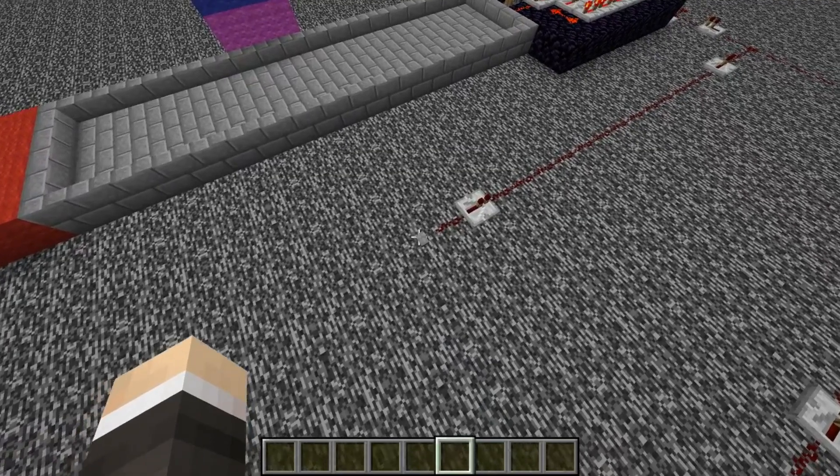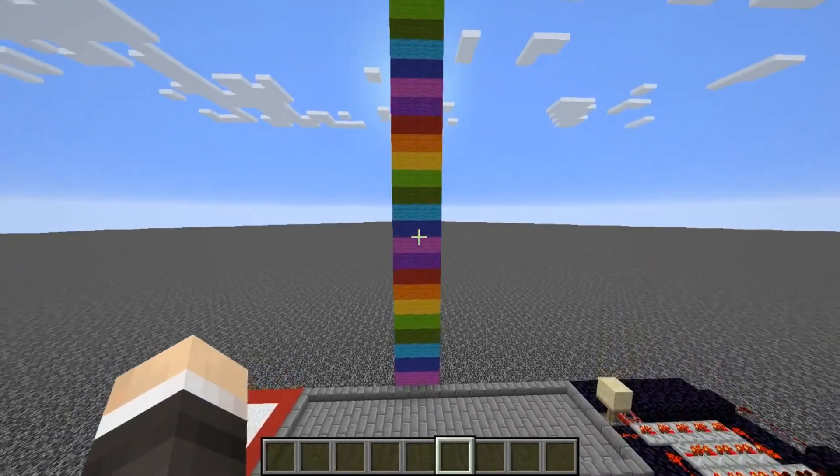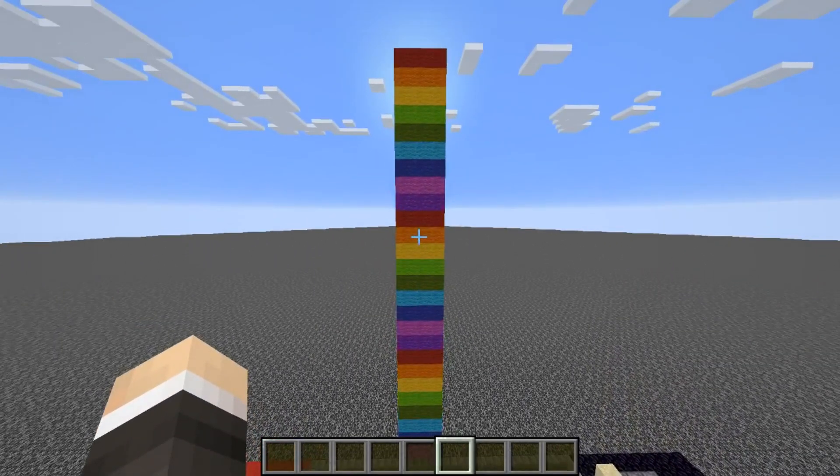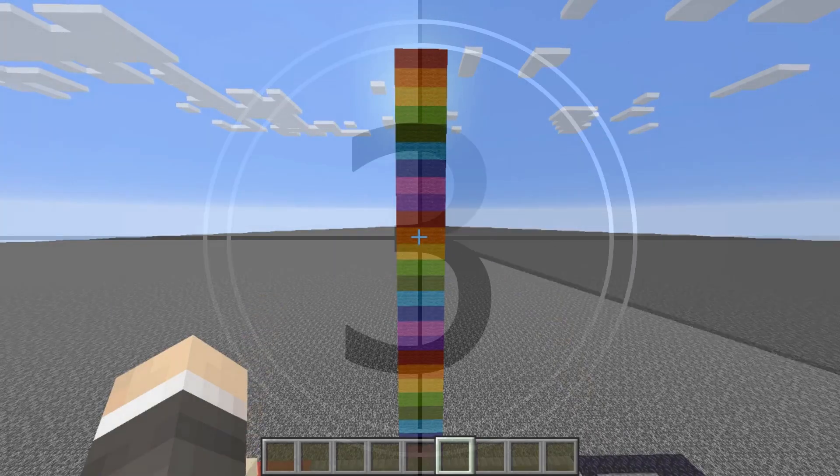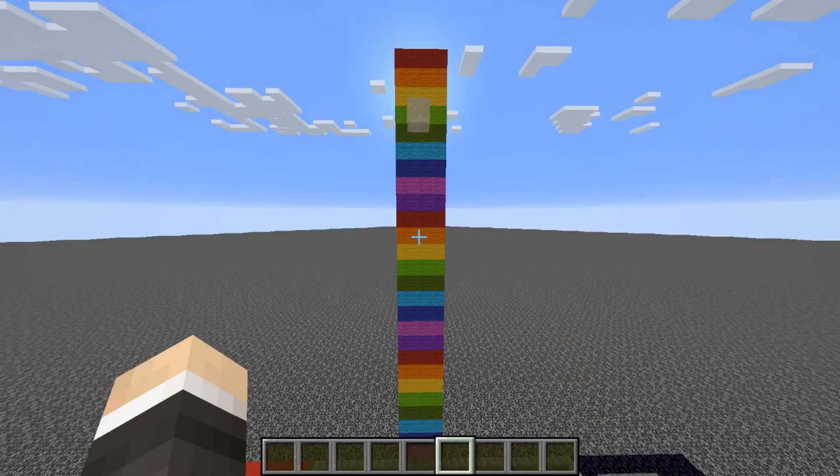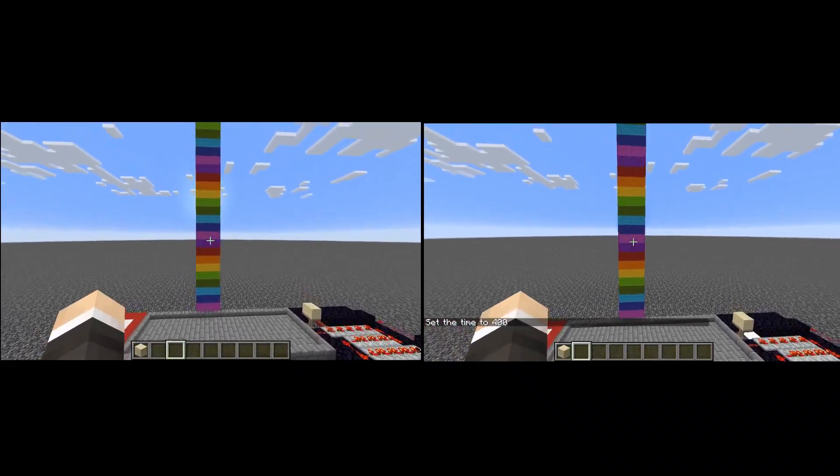To finally begin collecting data, press the button priming the TNT used to launch the sand block. Upon explosion, start the time on the stopwatch and end the time once it hits the floor. While the block is in the air, record the highest point it travels using the colored tower as a guide. Repeat this trial two more times.